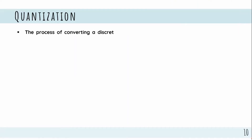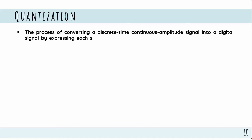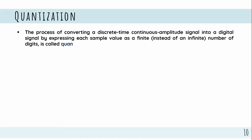The process of converting a discrete-time continuous-amplitude signal into a discrete signal by expressing each sample value as a finite instead of an infinite number of digits is called quantization.